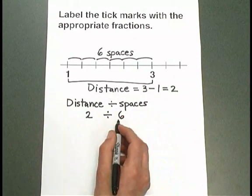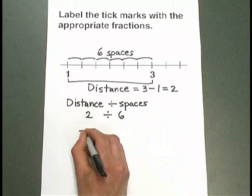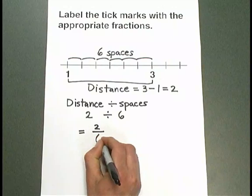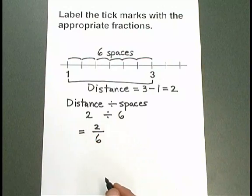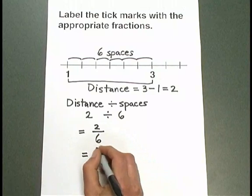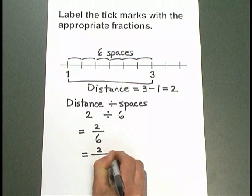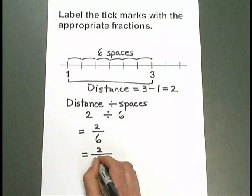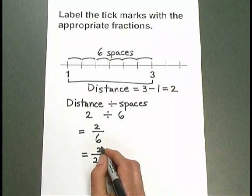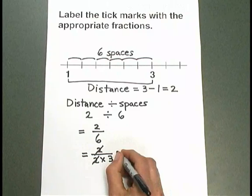2 divided by 6, we can write as a fraction. 2 over 6. And let's reduce 2 over 6 here. 2 over 6 can be written as 2 over—I'm going to break down that 6 as 2 times 3. I can cancel a factor of 2 above and below.